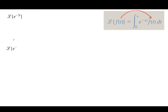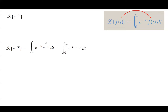We're going to calculate the improper integral of e to the power negative 3t times e to the power negative st dt. Since you have the same base, you just need to combine the exponents. This becomes the integral of e to the power negative (s plus 3) times t dt.